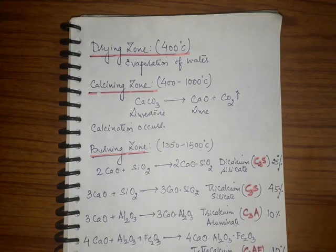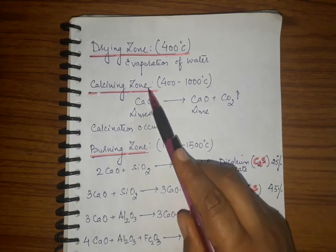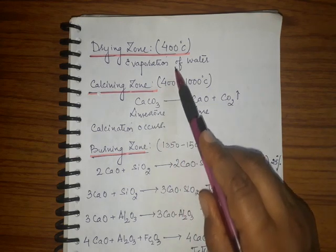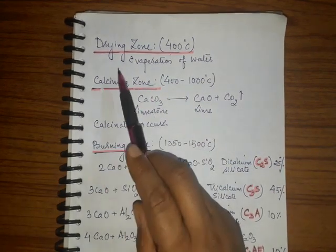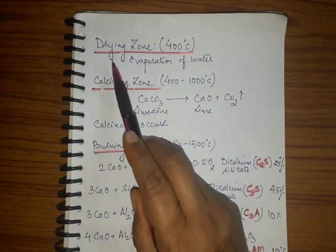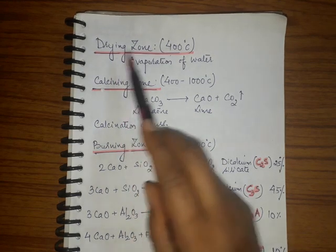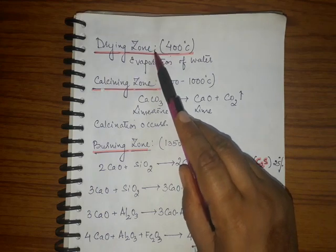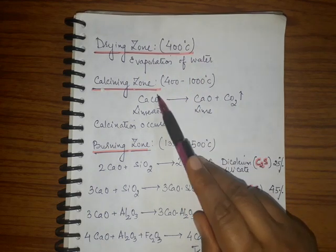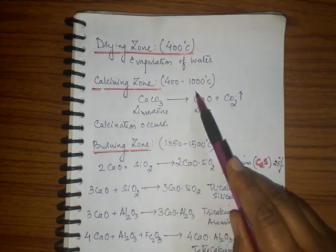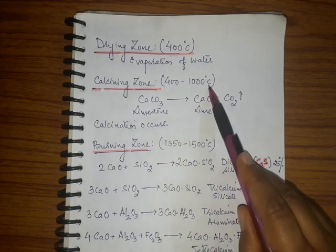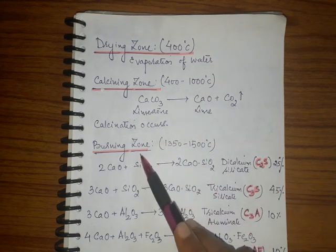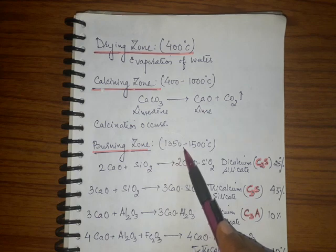Let's understand the chemical reactions involved in the various zones. In the rotary kiln there are three zones: the drying zone, the calcining zone within a range of 400 to 1000 degrees Celsius, and the burning zone within a range of 1350 to 1500 degrees Celsius.